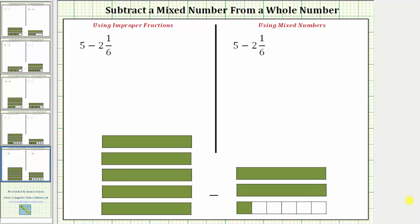Welcome to an example on how to subtract a mixed number from a whole number. We will look at two methods for determining five minus two and one-sixths. For one method we will use improper fractions, and for a second method we will use mixed numbers. We will also model the difference using the fraction bars below.